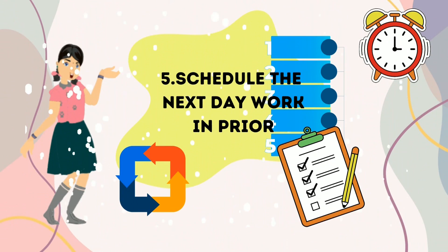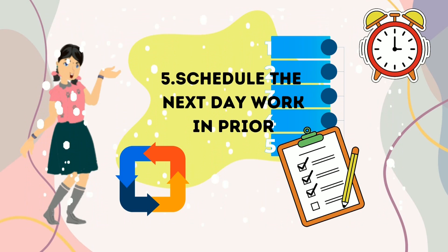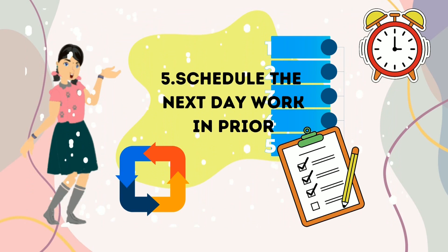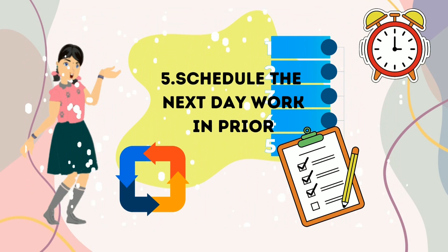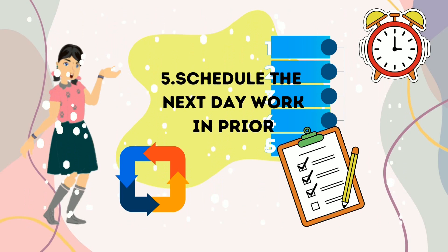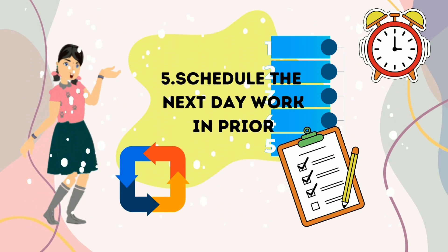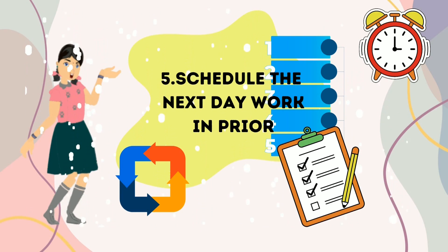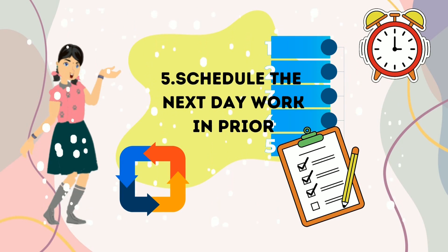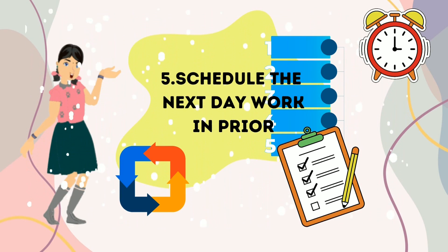The fifth tip is to schedule your work for the next day and check daily whether you have completed that particular day's work, giving star ratings accordingly. These stars reflect your life's progress. Follow this for at least 27 days and you'll definitely find progress in your life.